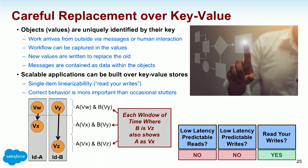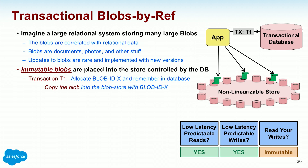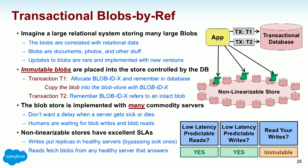Transactional blobs by ref: imagine an app storing an immutable blob. I do a transaction to identify the blob, copy a big document out into some store that holds immutable stuff, then answer. This could be a non-linearizable store because the data is immutable, and the blob is implemented with many commodity servers. Because it's non-linearizable, it's fast.